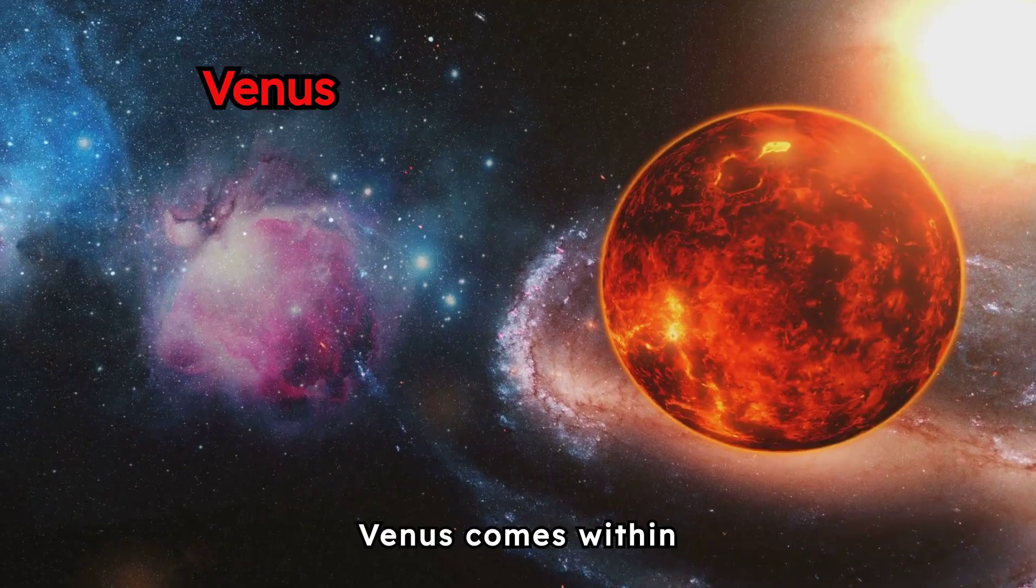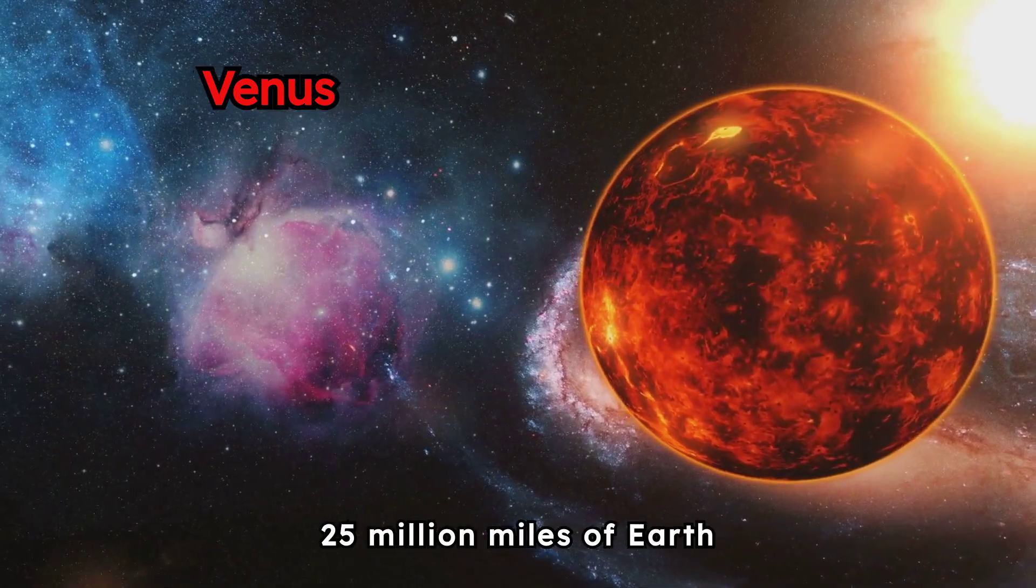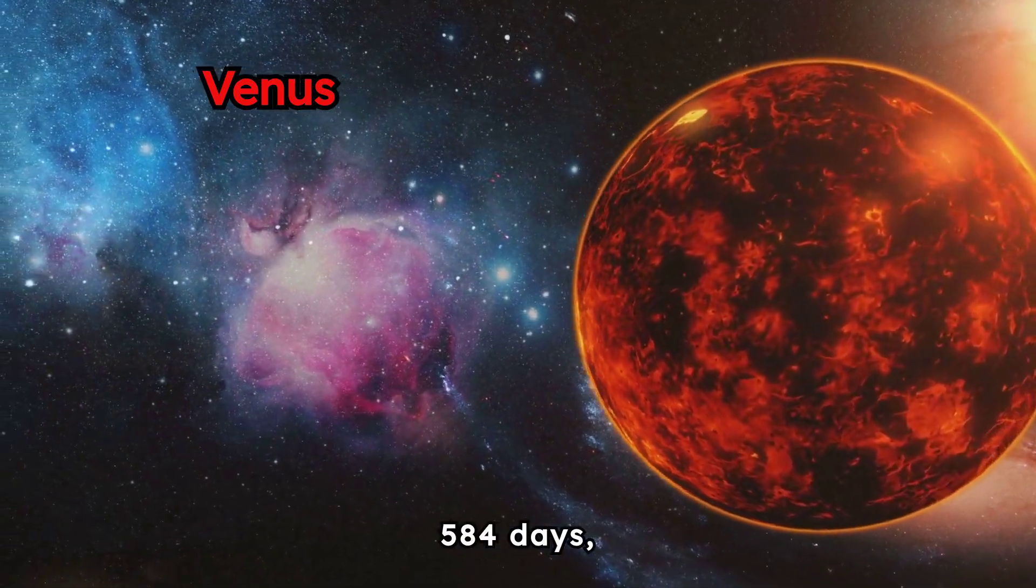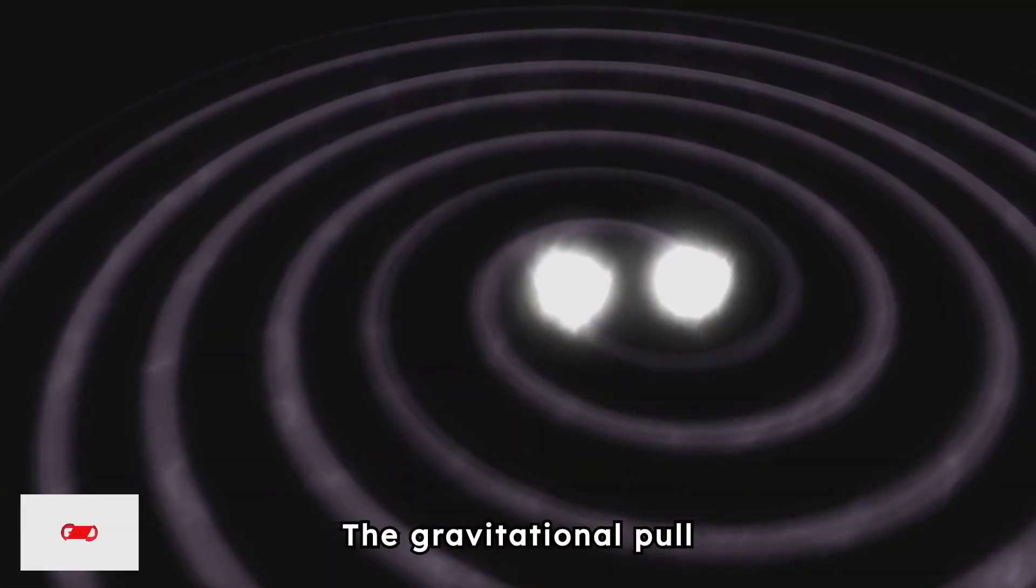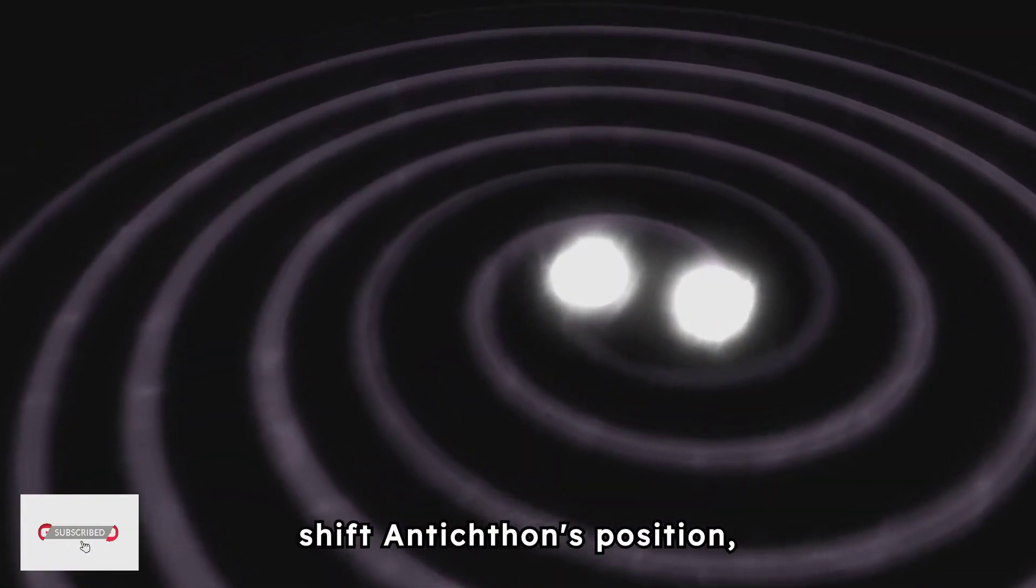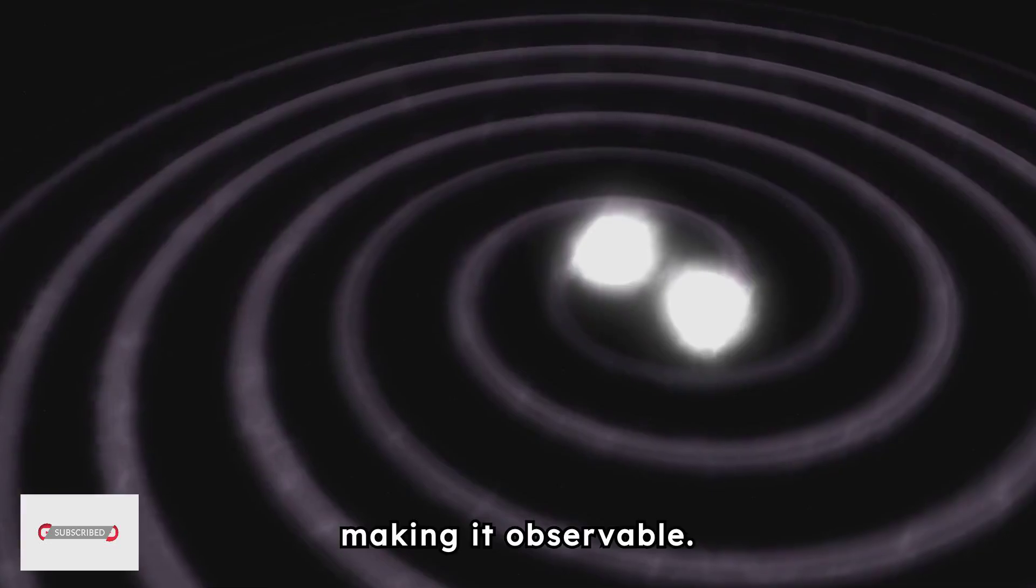For instance, Venus comes within 25 million miles of Earth every 584 days, potentially getting close to the counter-Earth. The gravitational pull from Venus would likely shift Antikthon's position, making it observable.